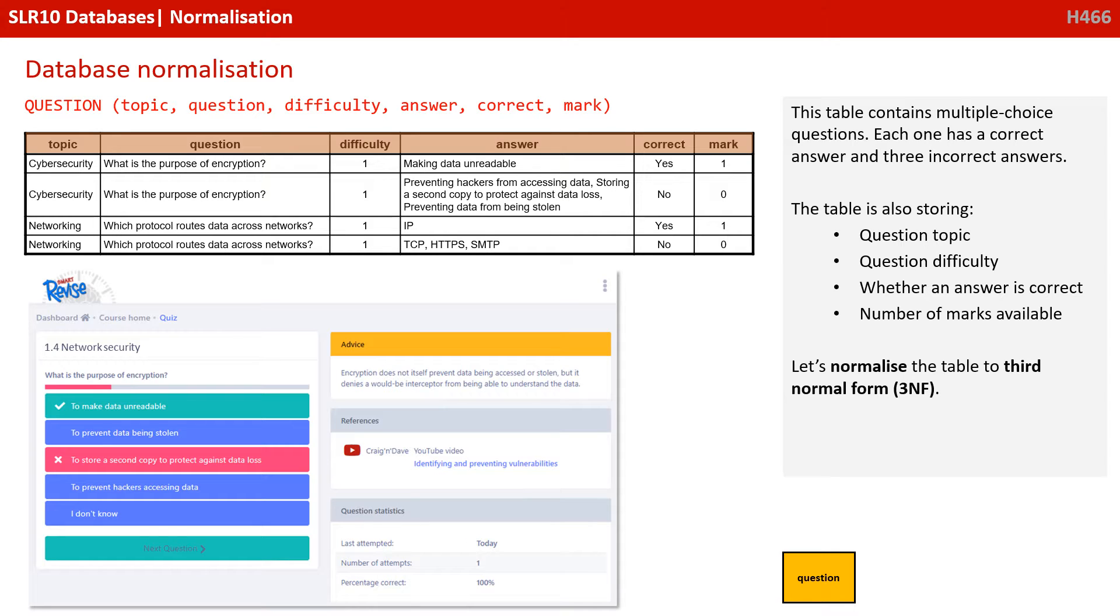Okay, so let's have a look at the situation we've got here. We've got a table which contains multiple choice questions. Each one has a correct answer and each one also has three incorrect answers. The table is also storing question topic, the question difficulty, whether the answer is a correct answer or not, and number of marks available. So let's try and normalize this table to third normal form.